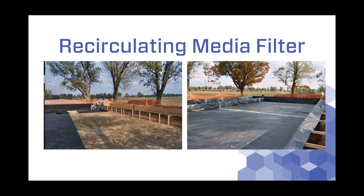First we lay down felt protectant onto the soil to keep the liner from puncturing. All of this is part of a kit that Claire's Environmental sells — we supply all the materials for the recirculating media filter except the media, which is brought to the site locally. The kit includes distribution laterals, an EPDM 45-mil liner, all the piping, boot seals where you pierce the liner, zone valves, pumps, controls, and so on.